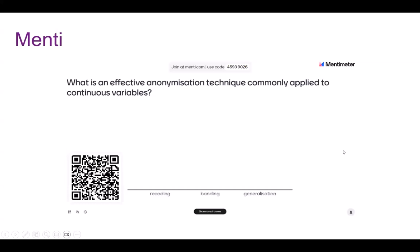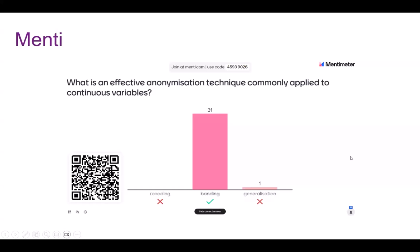What is an effective anonymization technique commonly applied to continuous variables — things like age and income? It is banding. You maybe could do generalization as well, but it would be a lot of work to try and re-describe the values. Banding is definitely what you can use with continuous variables.